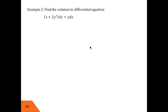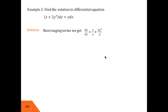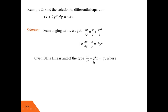Now look at the second example. The differential equation is (x + 2y³) dy = y dx. Rearranging, taking dy to the other side and y to the left-hand side, we get dx/dy = x/y + 2y³/y = x/y + 2y². Since we want only terms with y on the right-hand side, we take x/y to the left side to get dx/dy − x/y = 2y². This looks like dx/dy + p'x = q', where p' = −1/y and q' = 2y².